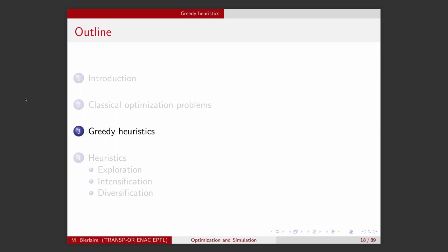We will see two types of them. The first one, called greedy heuristics, are designed to be fast and to provide very fast a solution which is feasible and not too bad. But usually, the quality of these solutions are quite poor. This is why we will see another set of heuristics which are designed to find a better solution.